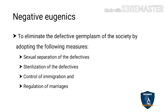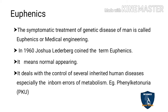Another negative eugenics measure is regulation of marriages — sexes should be separated and there should be regulations on marriage. Eugenics operates outside of nature; however, the aim is to rectify genetic problems that a person is born with, which is why treatment and correction are considered part of eugenics.